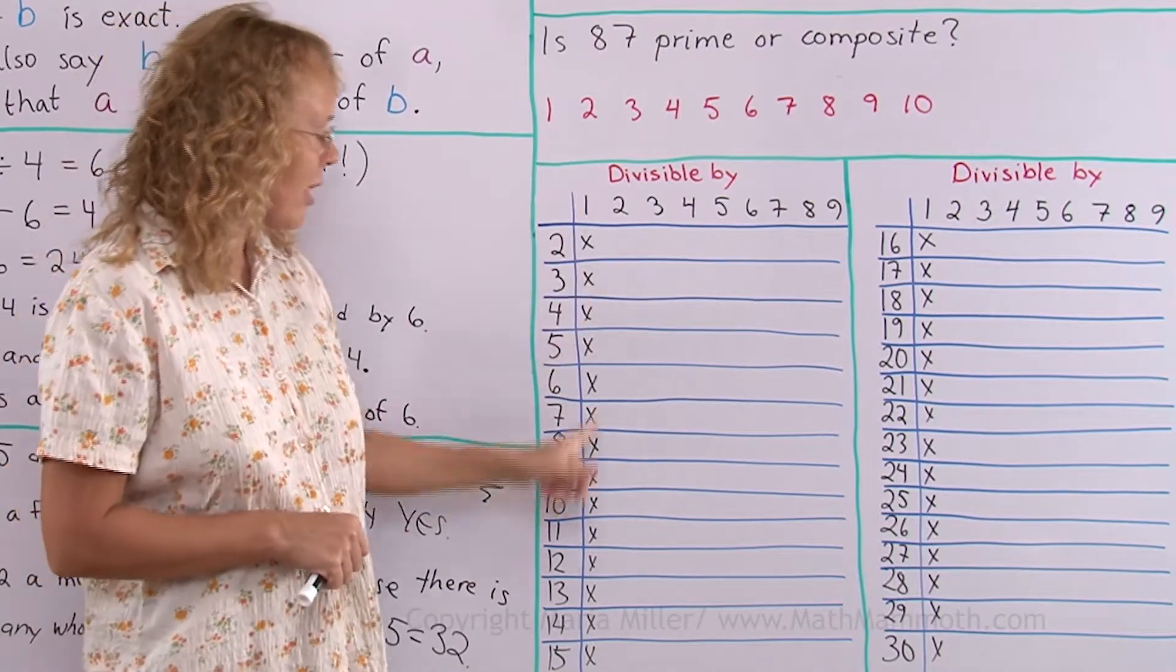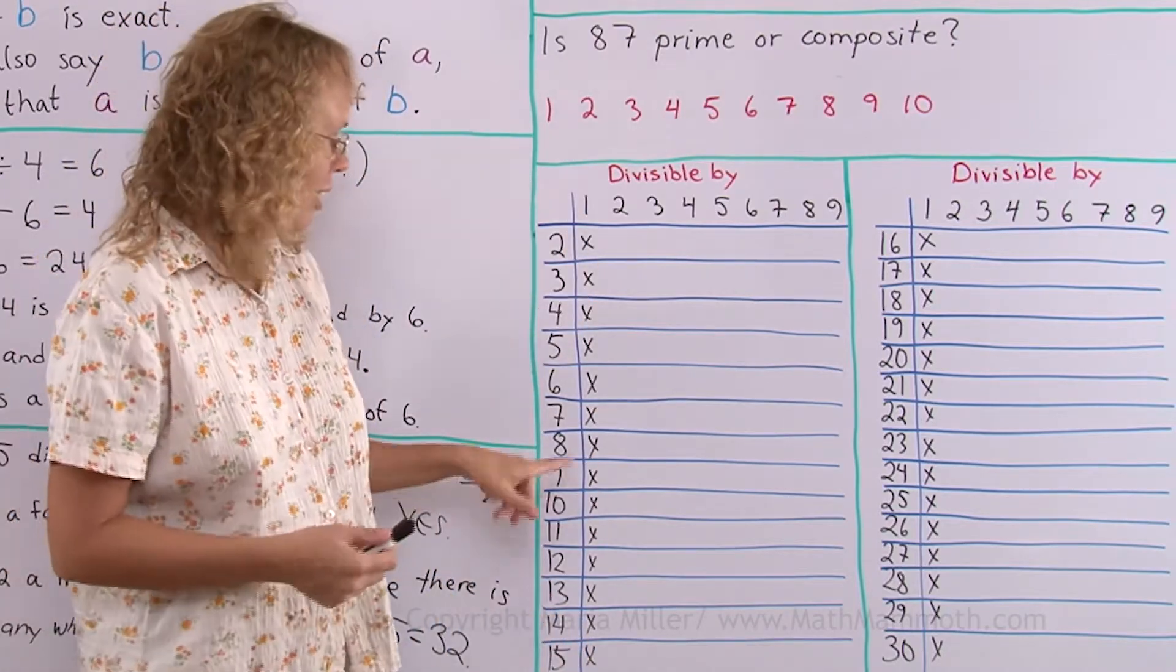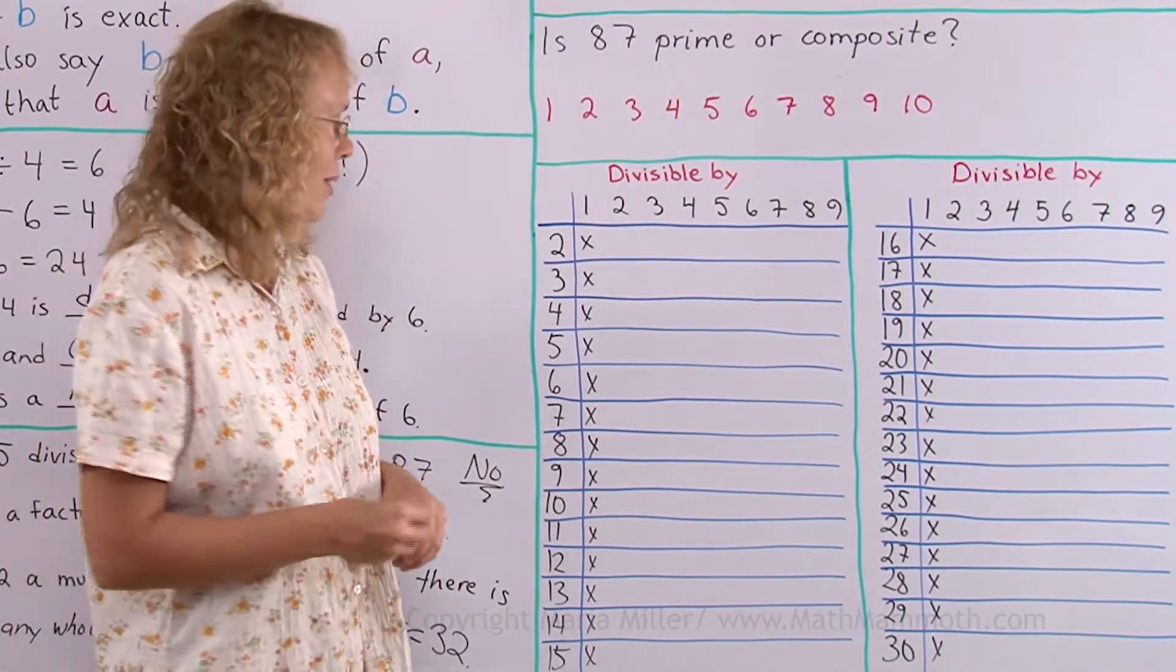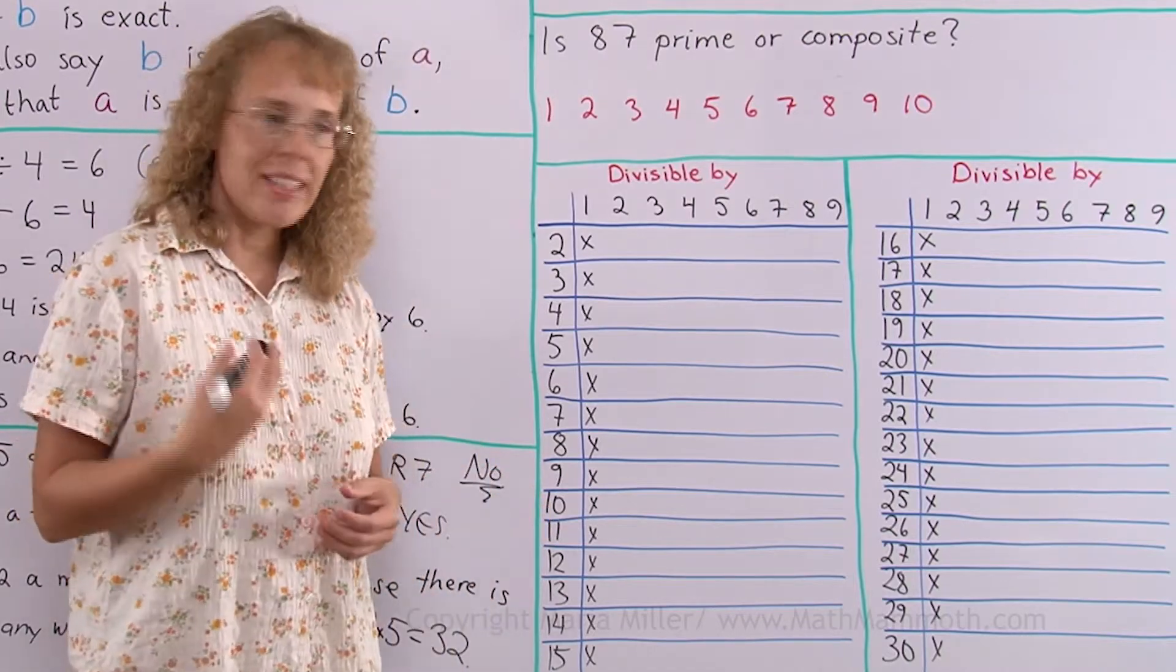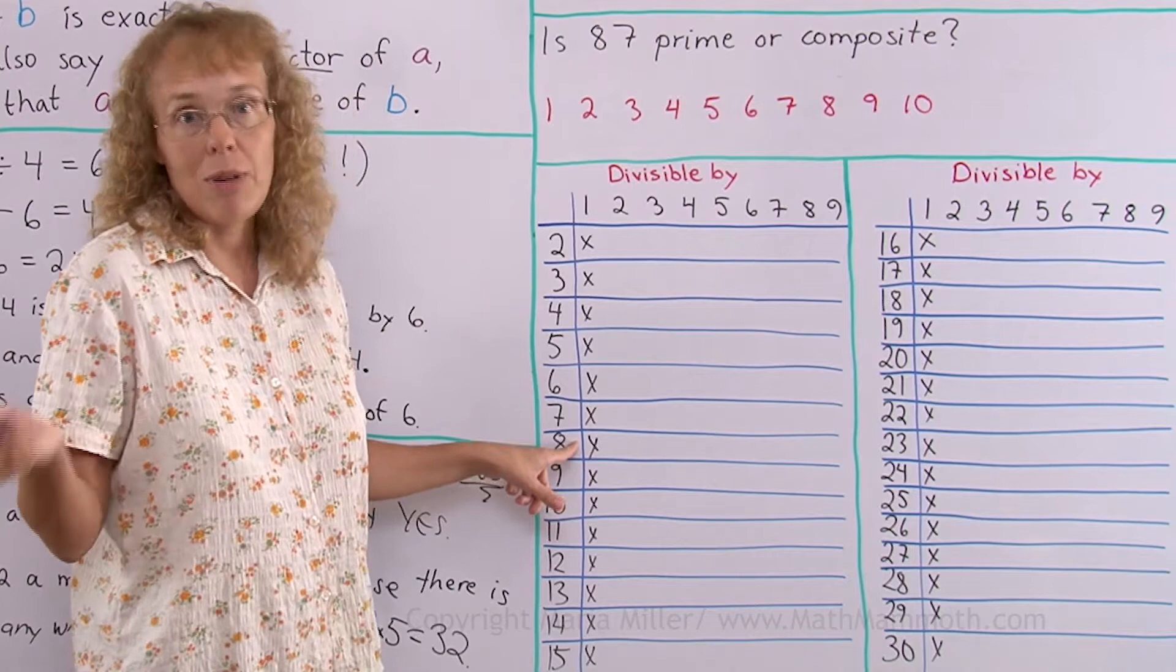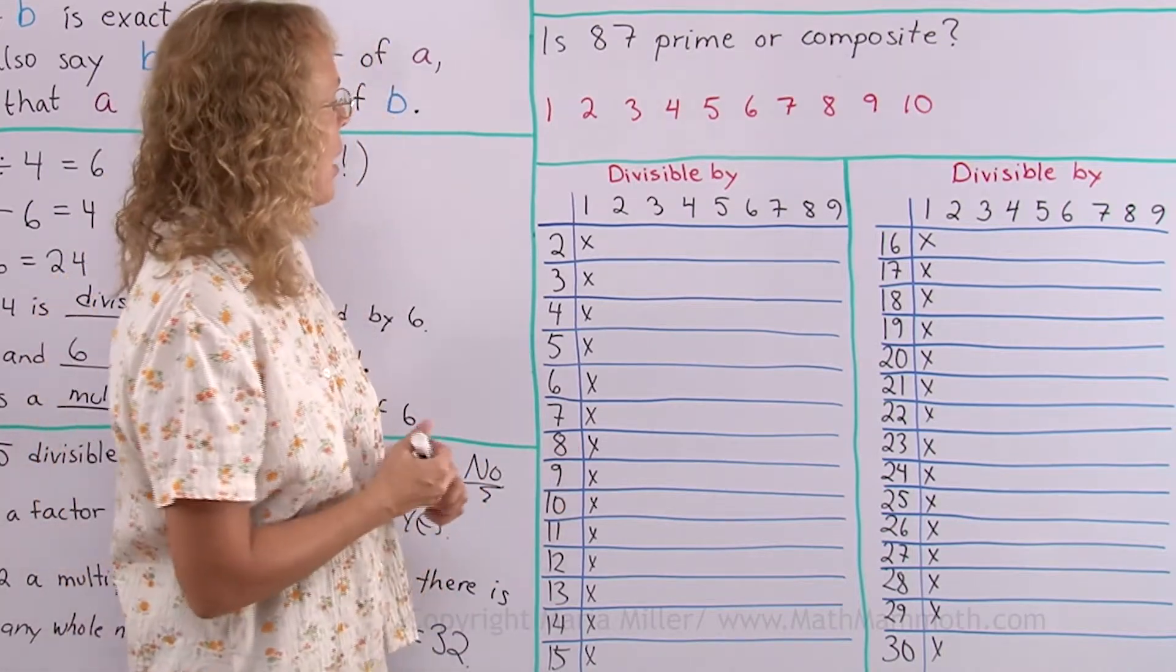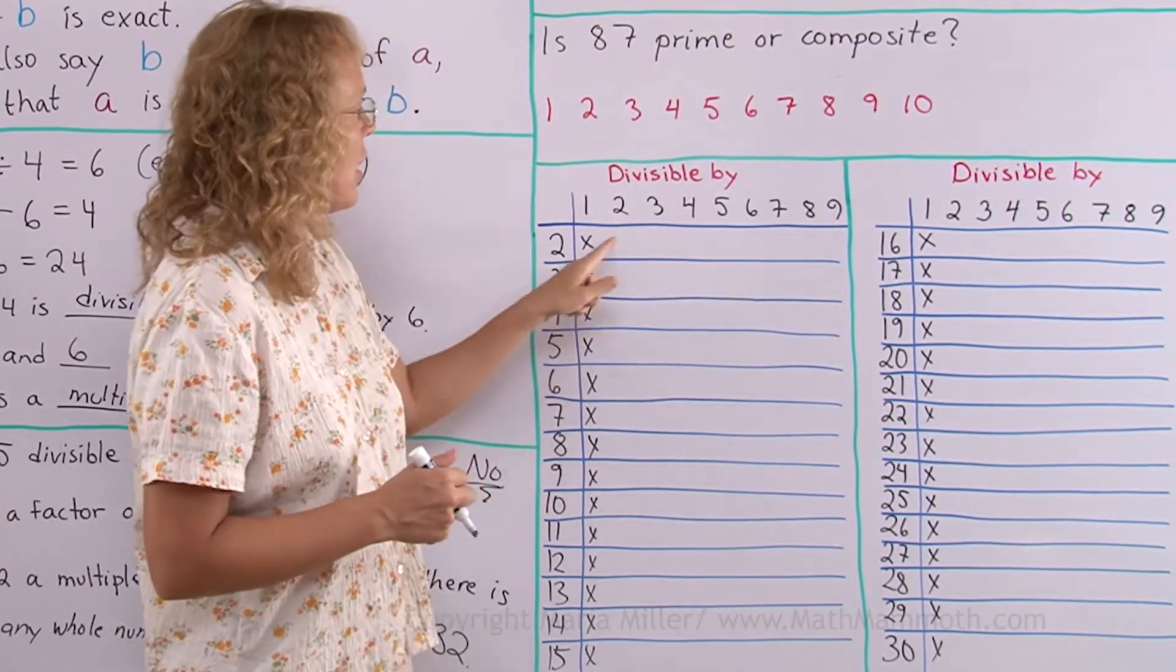I put an X mark here for 1 already because every single number is divisible by 1. You know, 8 divided by 1 equals 8. And every number is also divisible by itself, like 8 would be divisible by 8 because you get 1, or 13 would be divisible by 13. But let's now study these others: 2, 3, 4, 5, 6.